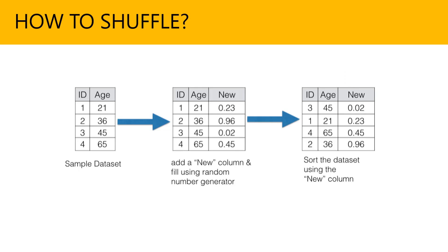Starting from the left, you have the sample dataset which has two columns — ID and A — with about four rows, one through four, with respective ages shown. In the middle part, you add a new column and fill it using a random number generator. Then on the far right side, you sort the dataset using that new column, which essentially shuffles the data. Once the data is shuffled, you can divide it into training and test datasets. Straightforward, but important.